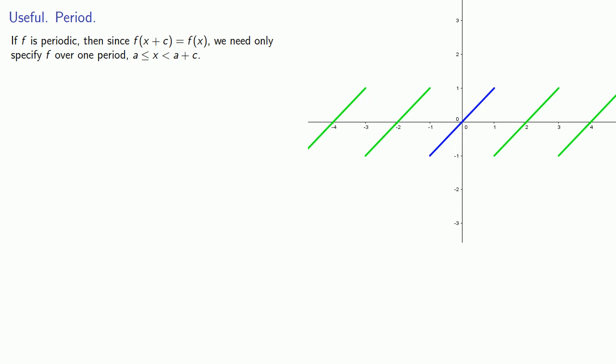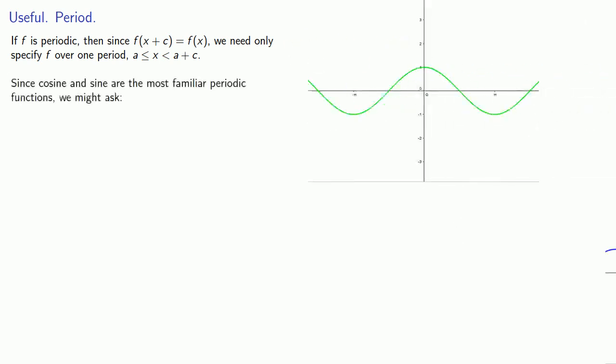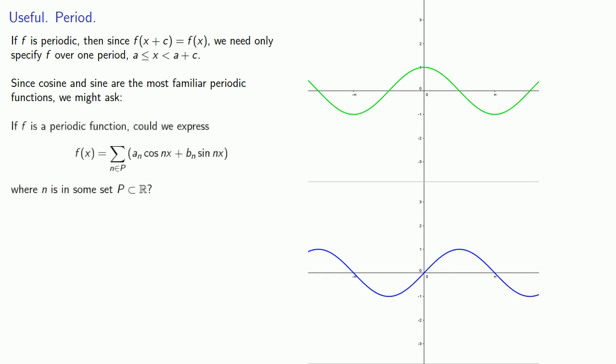One of the things that makes periodic functions so useful is that if f is periodic, then since f(x + c) = f(x), we only need to specify f over one period between a and a + c. Since cosine and sine are the most familiar periodic functions, we might ask: if f is a periodic function, could we express f as a series in cosine and sine?